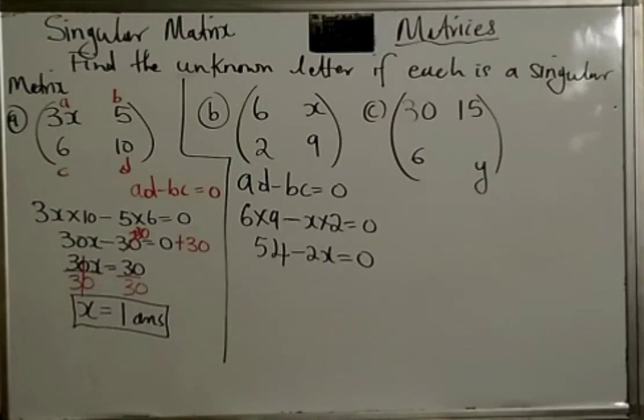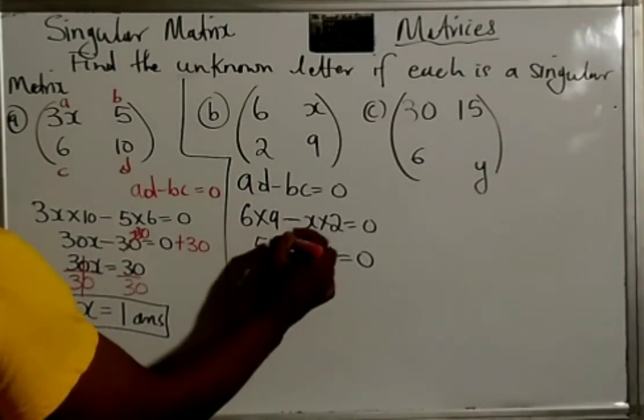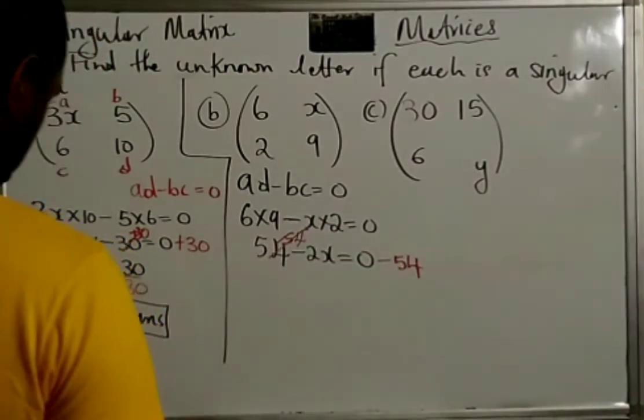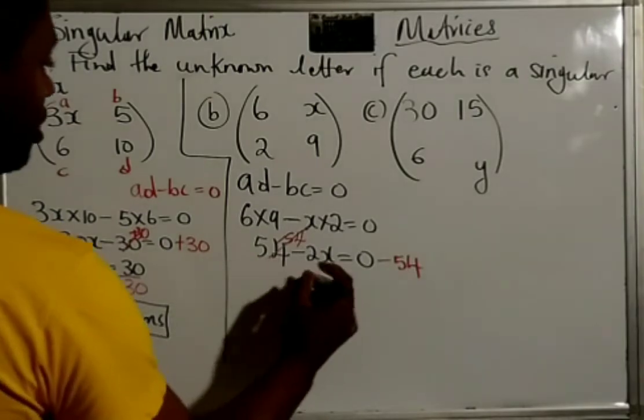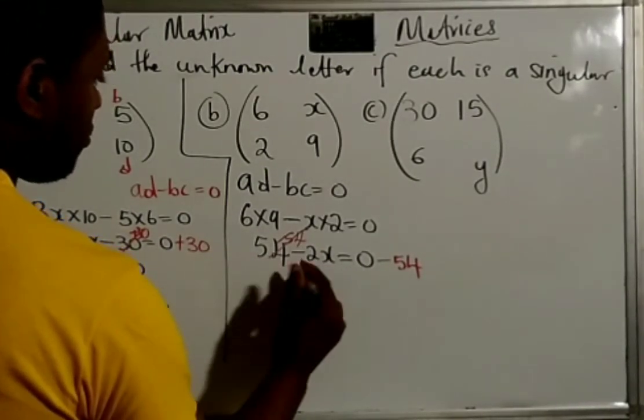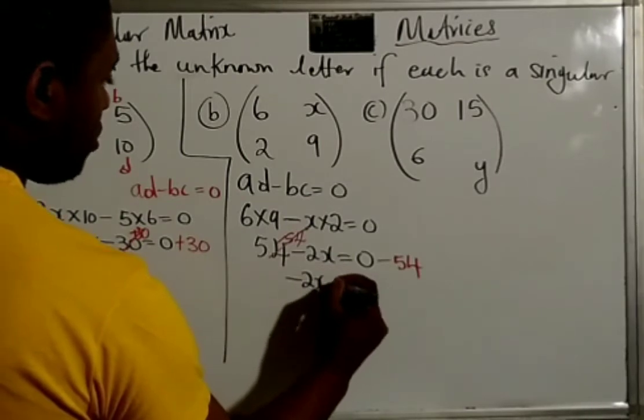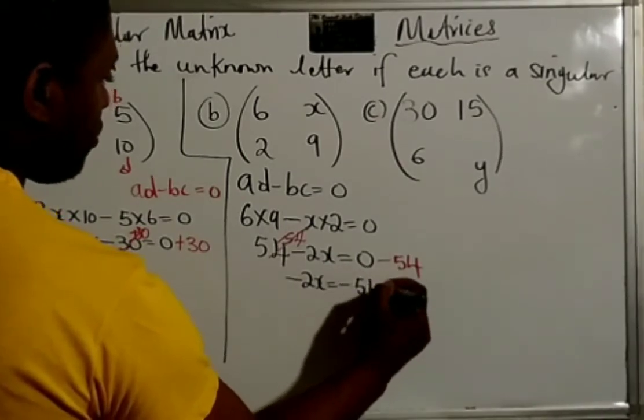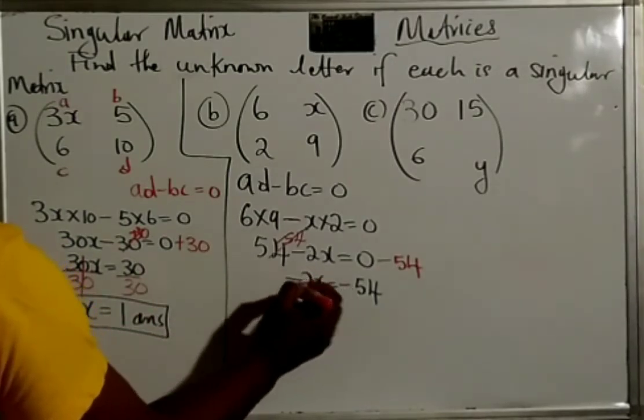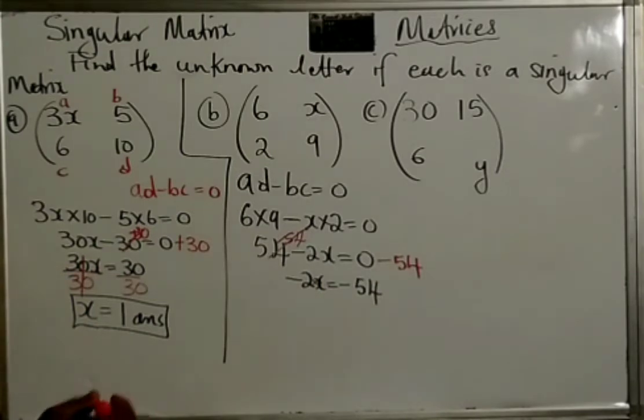Now, same thing, we are going to solve for X. Now, this is a plus 54, so we subtract 54 from both sides. So, we are left with this now. So, negative 2X is equal to negative 54. So, therefore, we want to get rid of this 2, which is saying negative 2 times X.